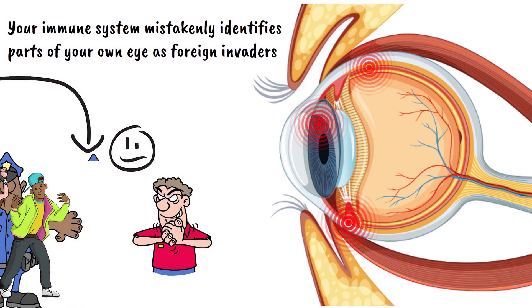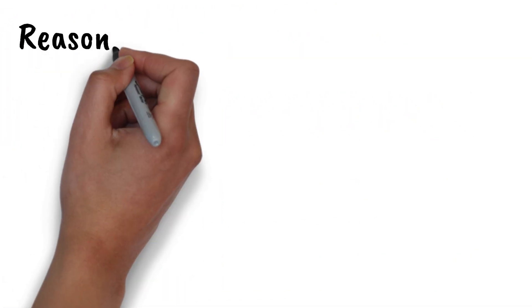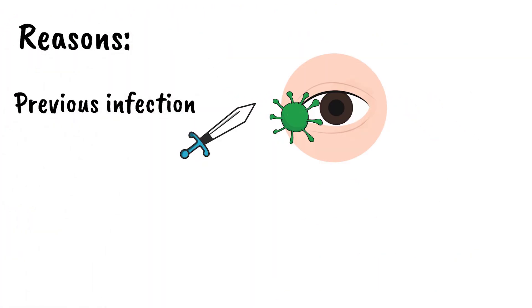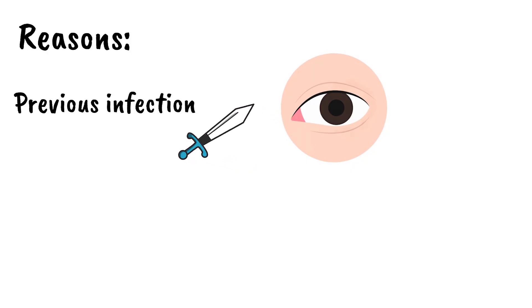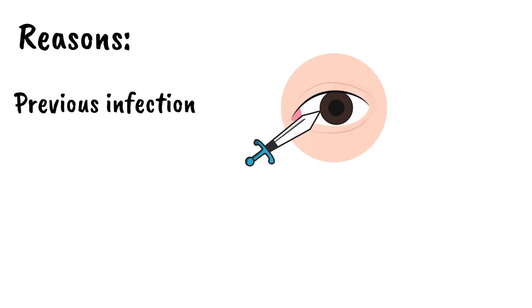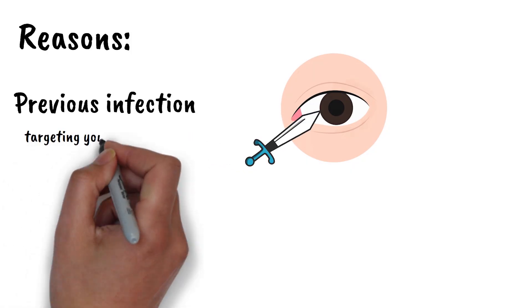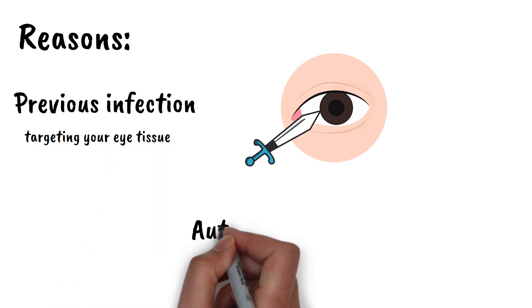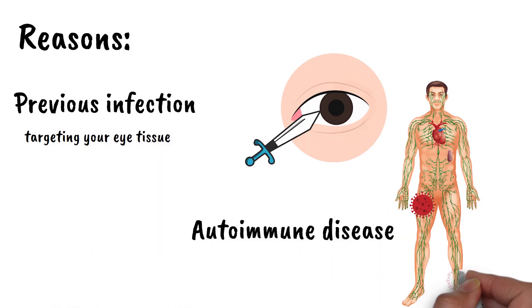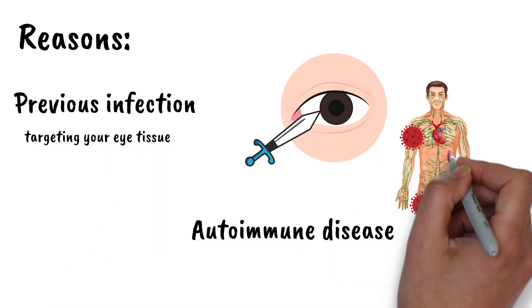This immune system confusion can happen for several reasons. Sometimes it's triggered by a previous infection — your immune system fights it off successfully, but then gets its wires crossed and continues fighting even after the threat is gone, now targeting your eye tissue instead. Other times, it's part of a larger autoimmune disease affecting multiple parts of your body.